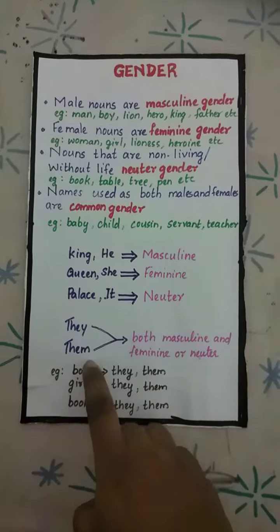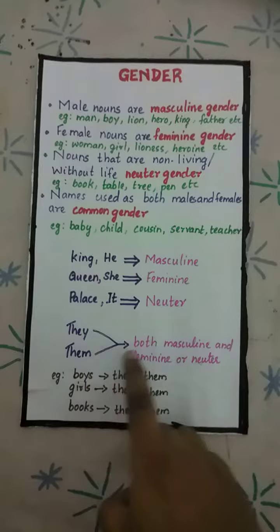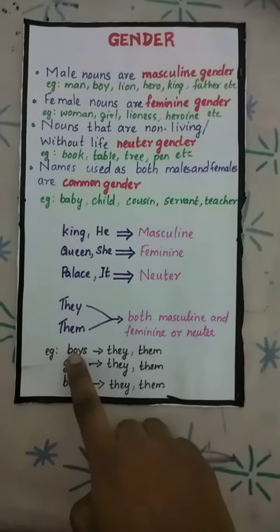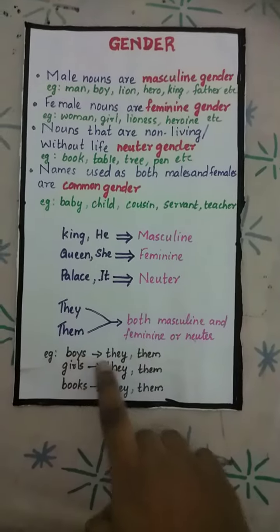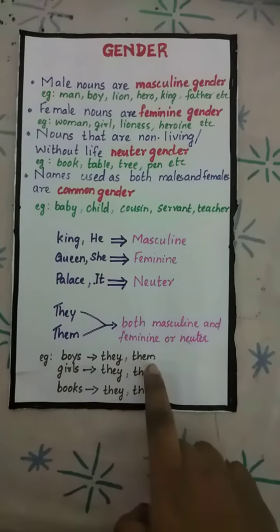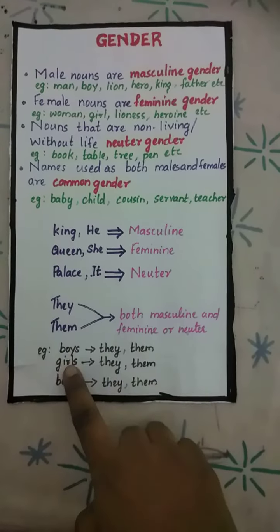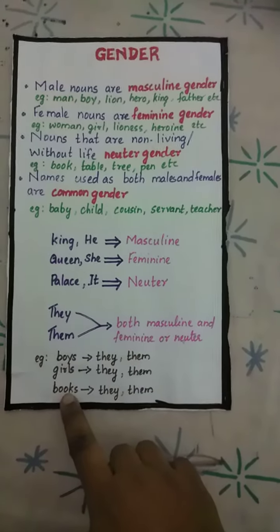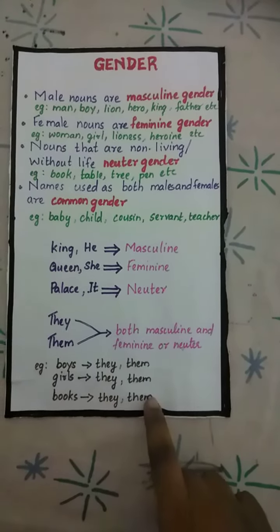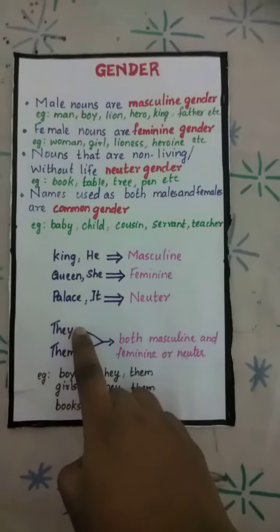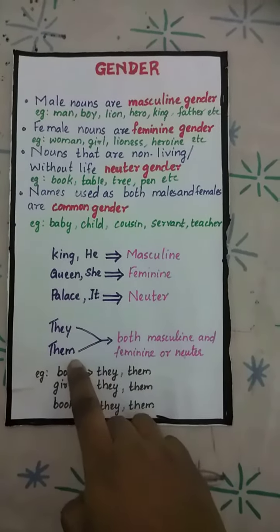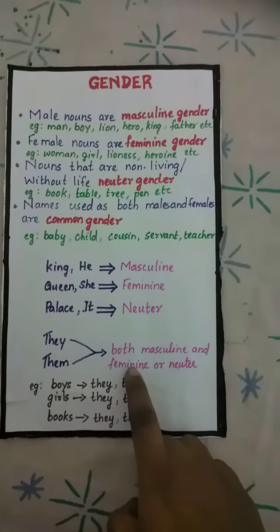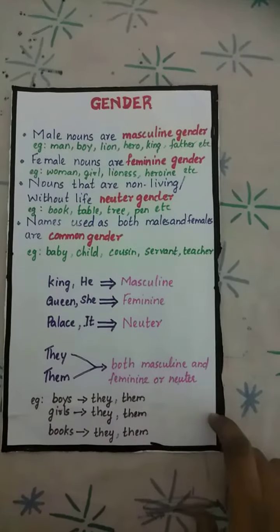They or them are used for both masculine and feminine. For boys we can use they or them; for girls also we can use they or them; for books also we can use they or them. So, they or them are used for masculine, feminine, or neuter gender.